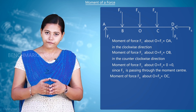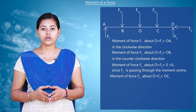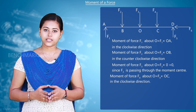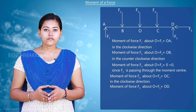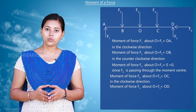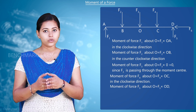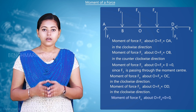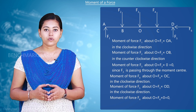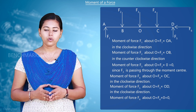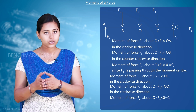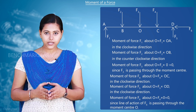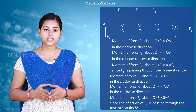The moment of force F4 about O is equal to F4 into OC, in the clockwise direction. The moment of force F5 about O is equal to F5 into OD, in the counterclockwise direction. The moment of force F6 about O is equal to zero, since the line of action of F6 is passing through the moment center O.